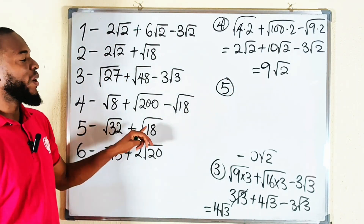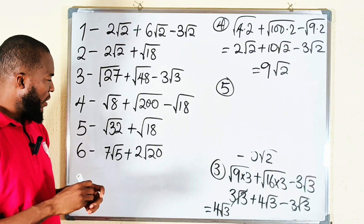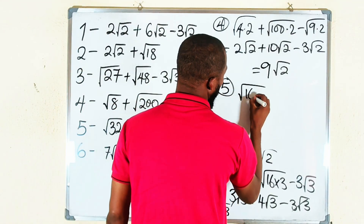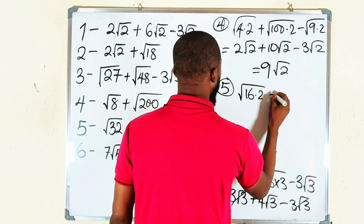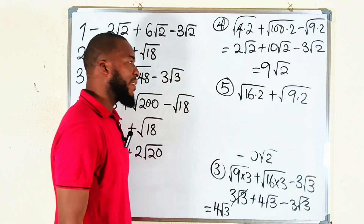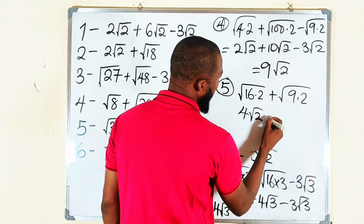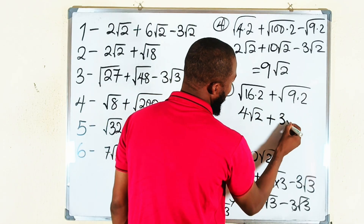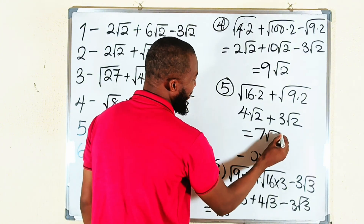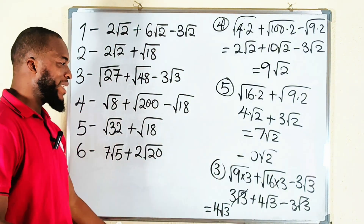Number five: we have square root of 32 and square root of 18. We convert: 32 = 16 × 2 and 18 = 9 × 2. Square root of 16 is 4, giving 4 root 2. Square root of 9 is 3, giving 3 root 2. Now we have similar surds, and this equals 7 times square root of 2 — four apples plus three apples making seven apples.